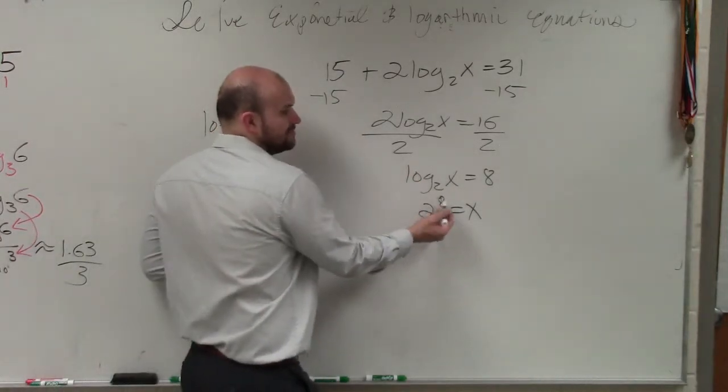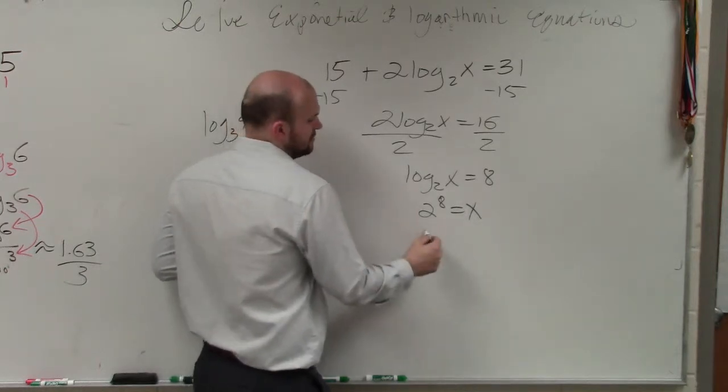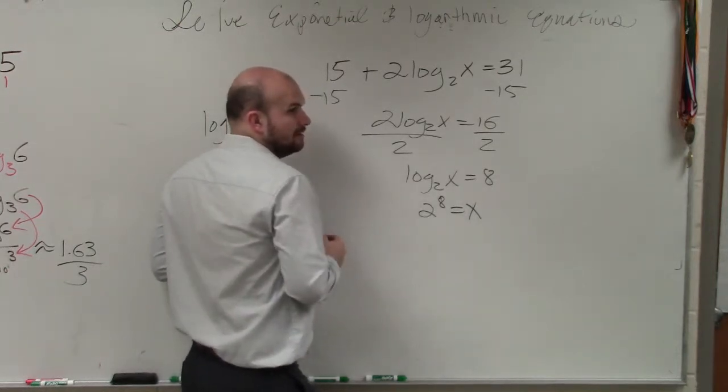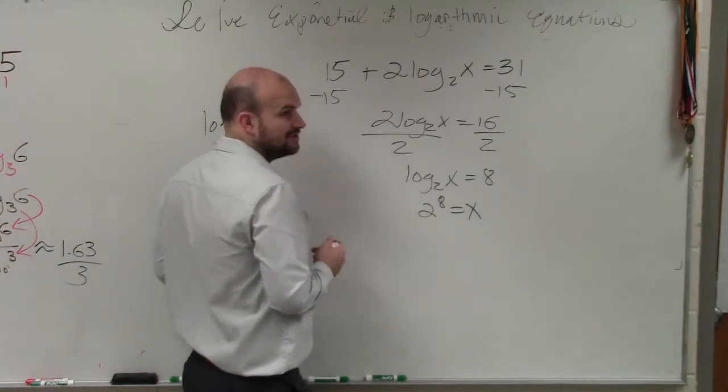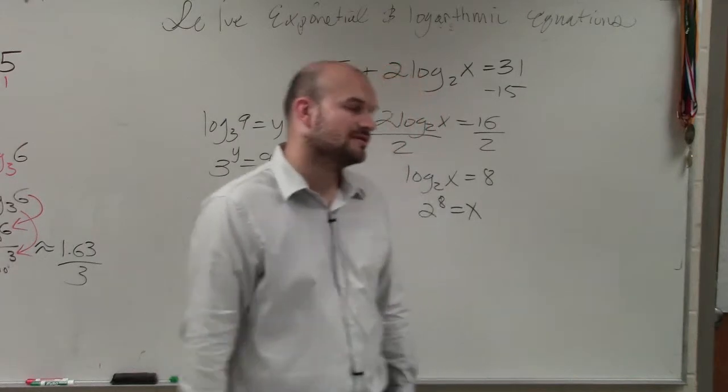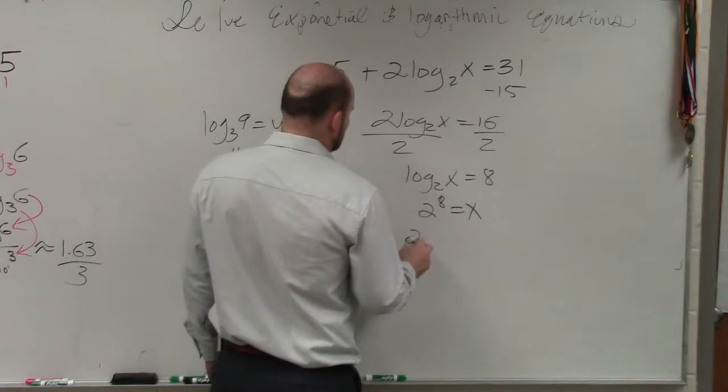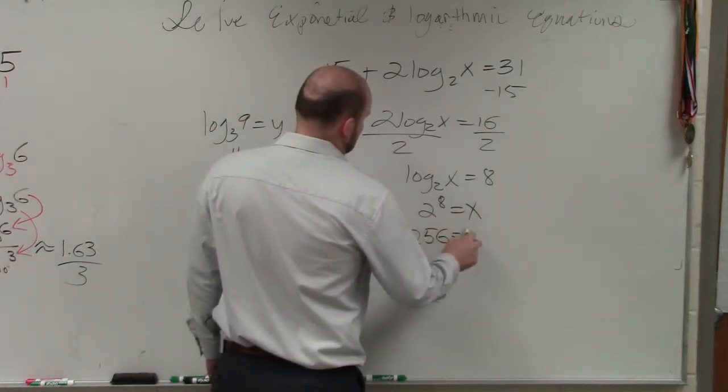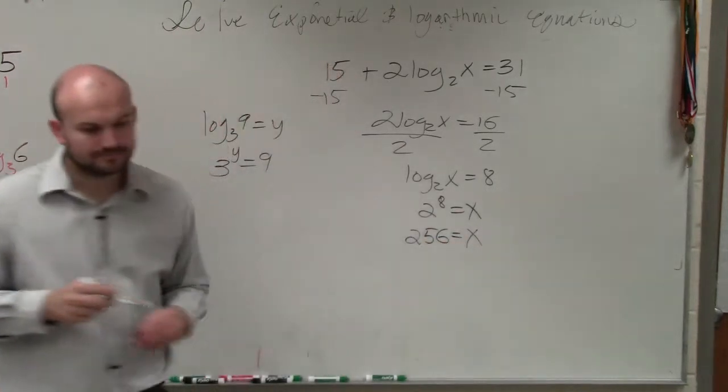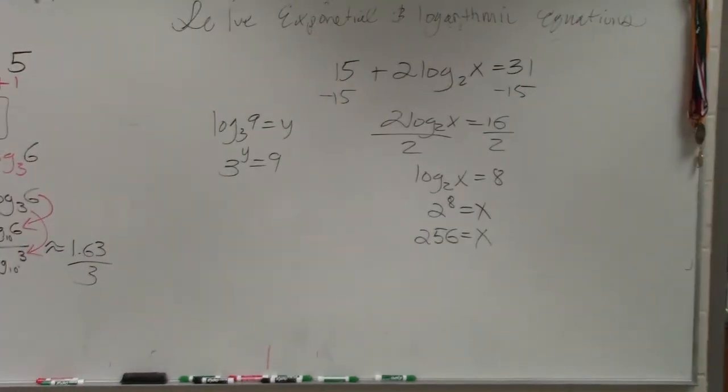So here, 2 raised to the 8th power. So 2 multiplied by itself 8 times is going to equal... Well, 2 to the 5th power is 32, 2 to the 6th power is 64, 2 to the 7th would be 128, 2 to the 8th would be 256. And that's it? That's it. It's actually pretty simple.